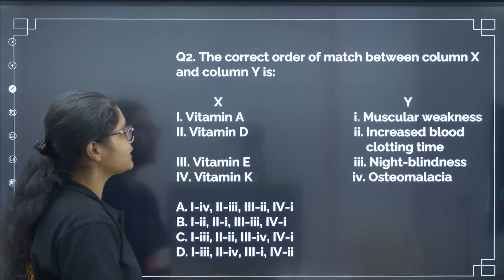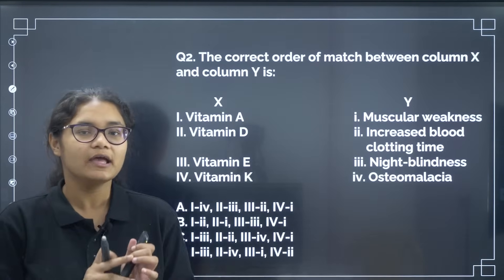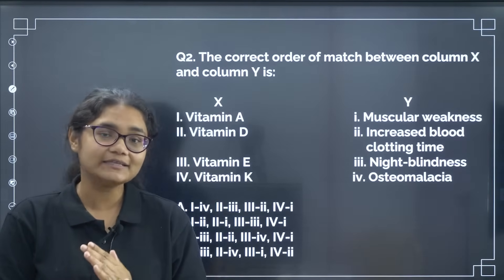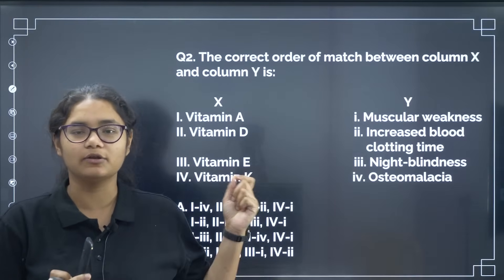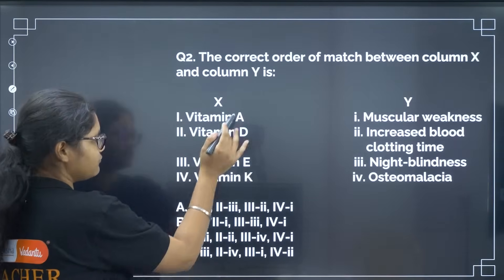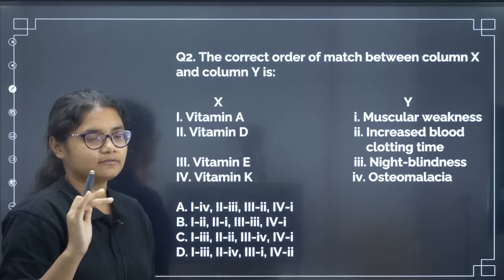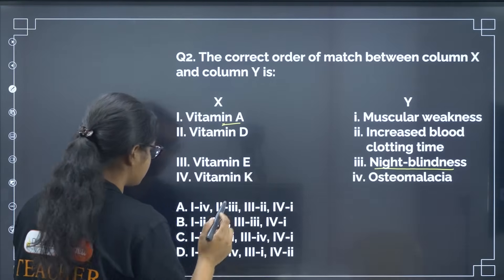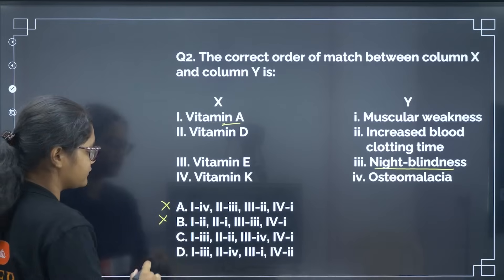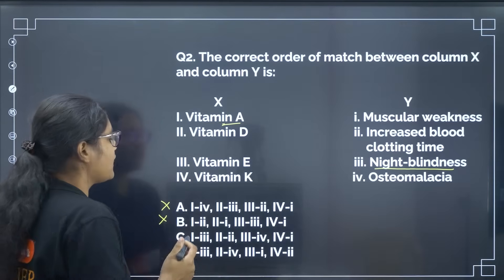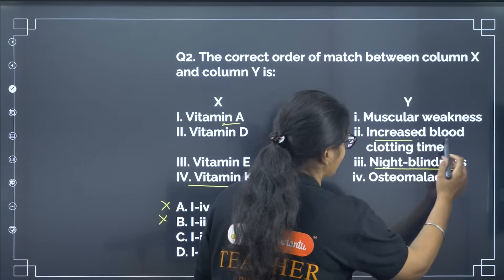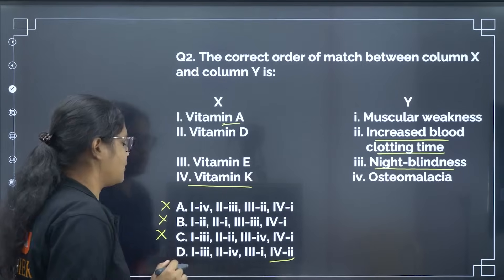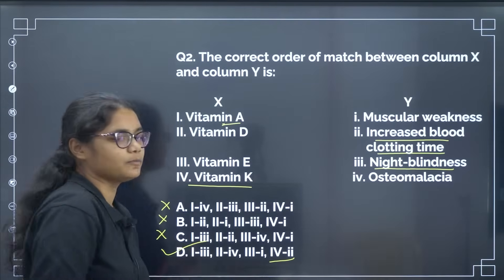Next, the correct match between column X and Y. In your NCERT book there is a table with vitamins, their sources, and deficiency diseases — please remember it, you will get one or two match-the-following questions. For example, vitamin A is for night blindness, so options A1 to 3 are incorrect. Vitamin K is for increased blood clotting time, so the fourth one should be option 2. The correct answer for this question is option number D.